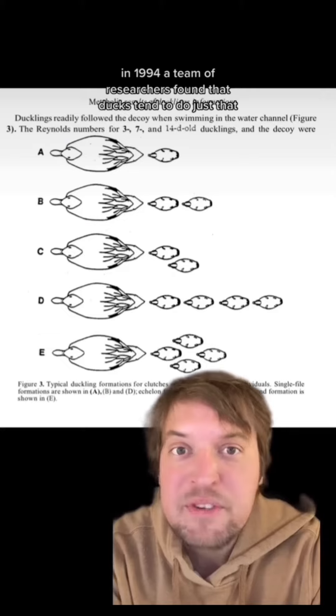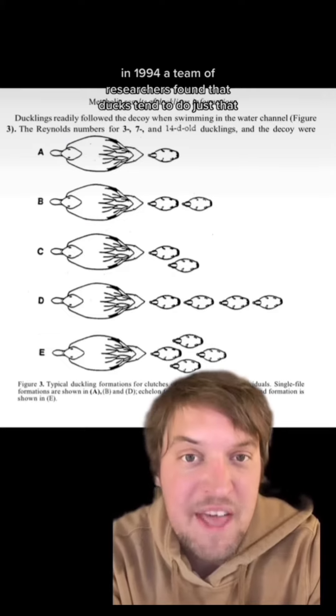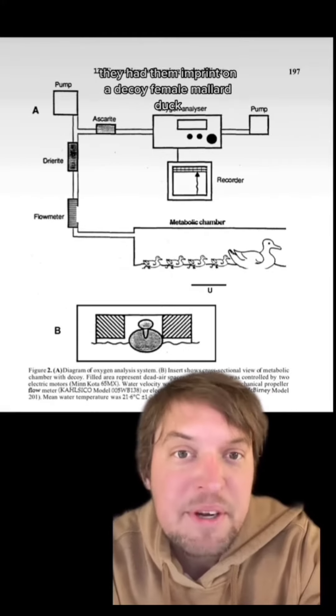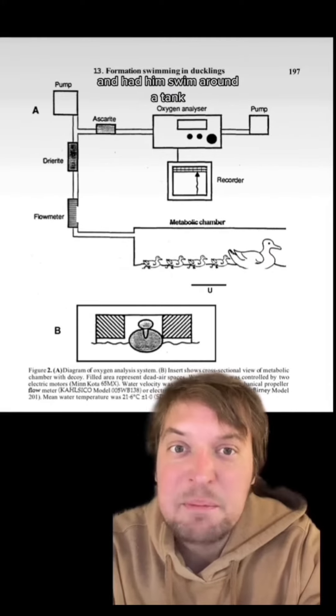In 1994, a team of researchers found that ducks tend to do just that when they studied 12 groups of seven one-day-old ducklings. They had them imprint on a decoy female mallard duck and had them swim around a tank.